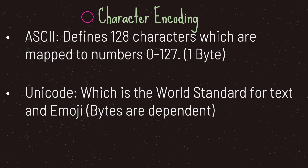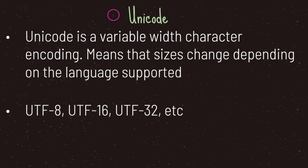The second character encoding type is called Unicode. Unicode is the world standard for text and emoji. It's difficult to pinpoint memory size when using Unicode because it's dependent on what's being stored. Unicode is a variable-width character encoding, meaning sizes change depending on the language supported.